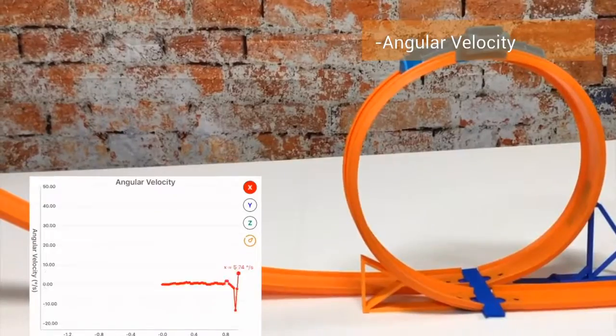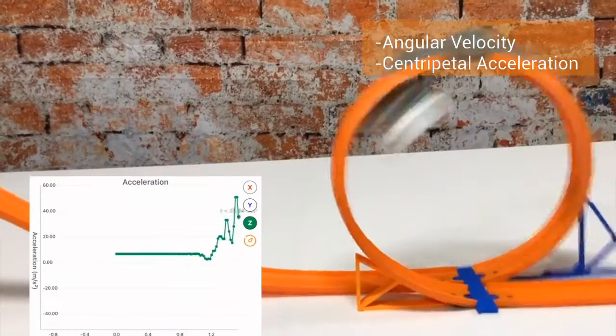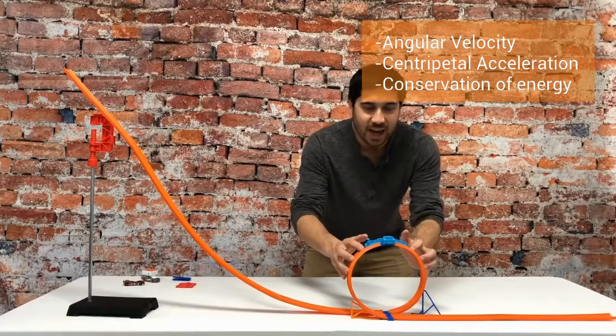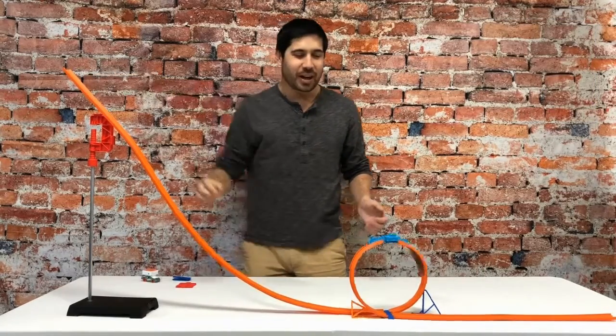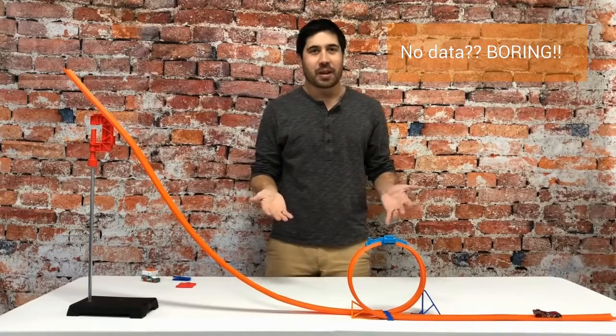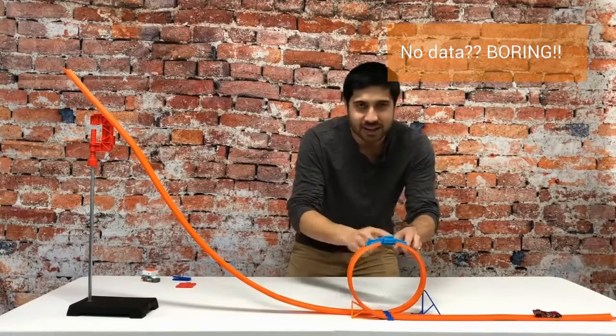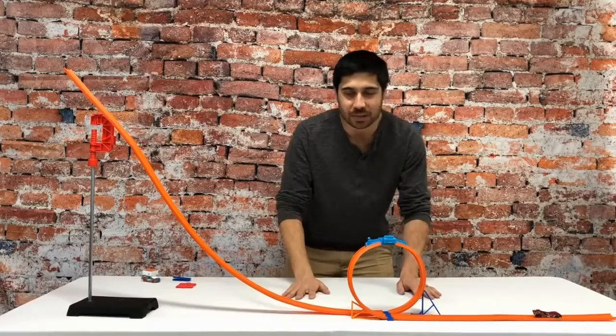Angular velocity, centripetal acceleration. But how do we get data out of something like this? Normally, if you put a Hot Wheels car on a Hot Wheels track, you can see what's going on, but it's very difficult to get data out of anything that we see.